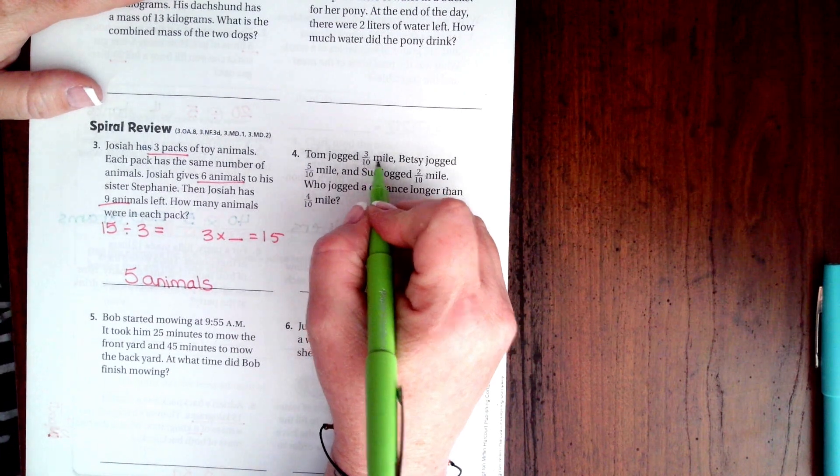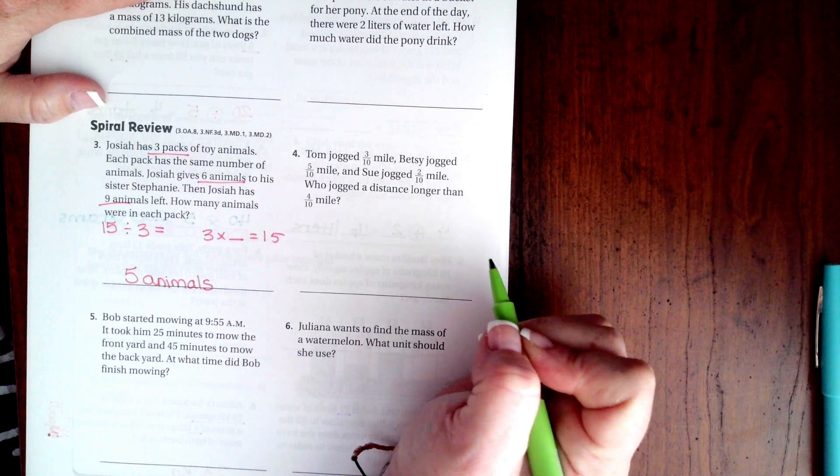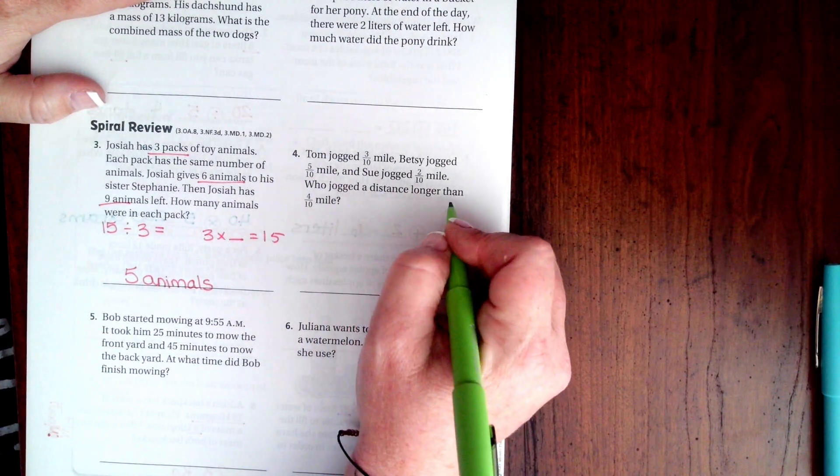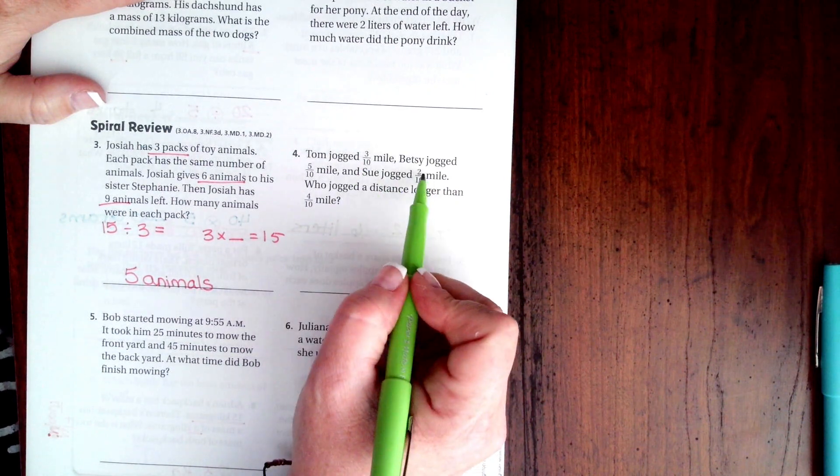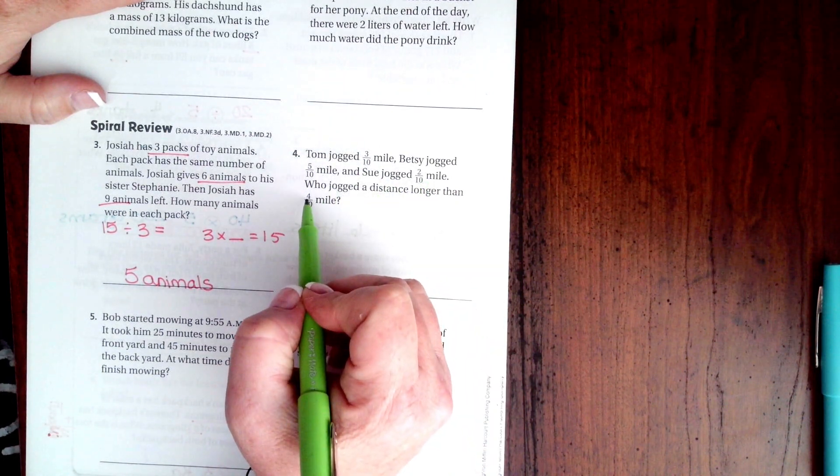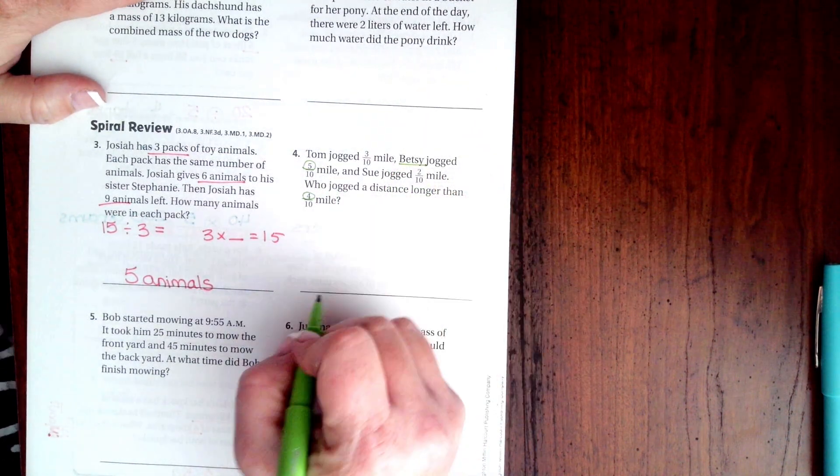Tom jogged 3 tenths of a mile. Betsy jogged 5 tenths of a mile. And Sue jogged 2 tenths of a mile. Who jogged a distance longer than 4 tenths of a mile? Well, there's 3 tenths and there's 2 tenths. The only one bigger than 4 here is our 5. So that would be Betsy.